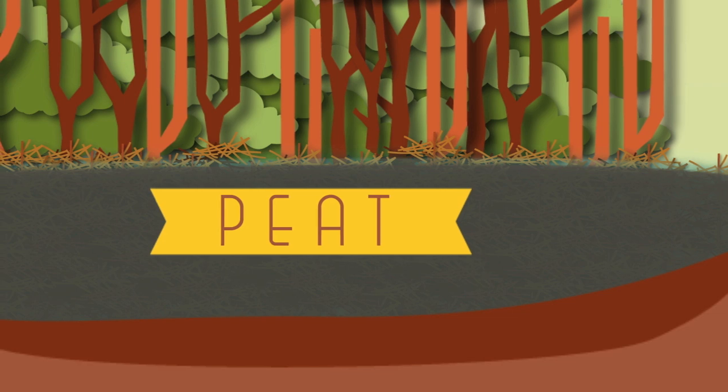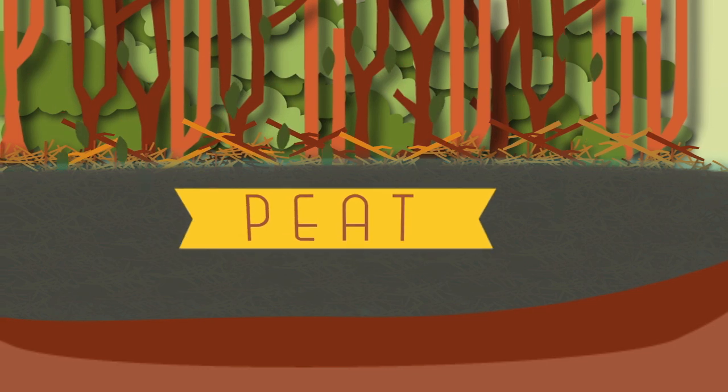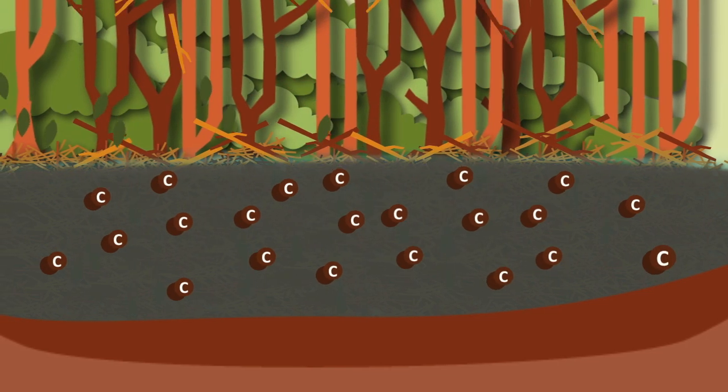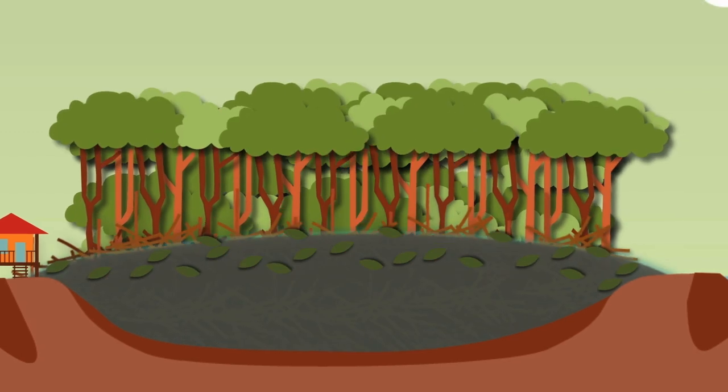Peat consists of the remains of fallen trees, branches, leaves, plants, and other carbon matters that have built up in waterlogged conditions for thousands of years, forming a peat dome.